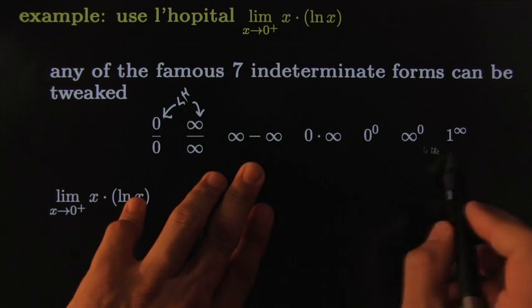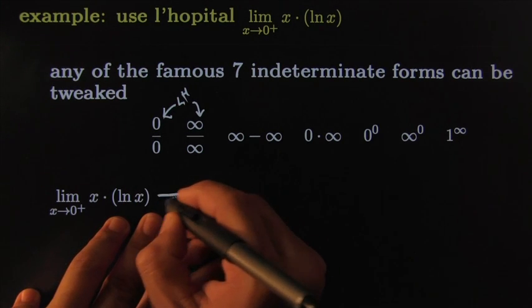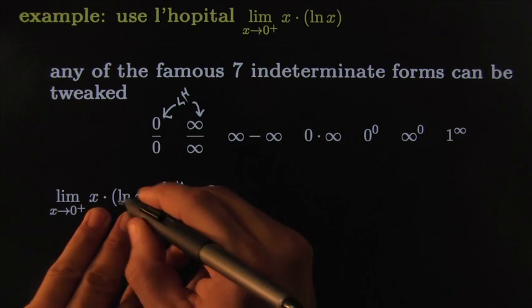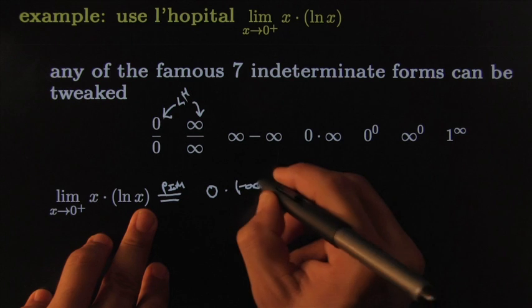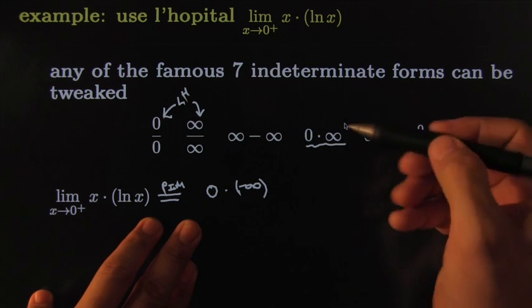These ones we also like, but they have to be tweaked. Here's a perfect example: if I go on and I try the plug-in method again, I get zero times ln of zero from the right side, that would be negative infinity. So in fact I get this one right here, zero times infinity—well, a variation of that. Don't let the negative bother you, it's just a negative.